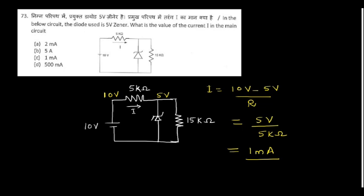In the circuit below, a Zener diode is used at 5V. What is the value of current I in the main circuit? The current flows through the 5 kilohm resistor. One end of the resistor is at 10V and the other is connected to the 5V Zener. The potential difference is 5V, so I = 5V / 5kΩ = 1 milliamp.